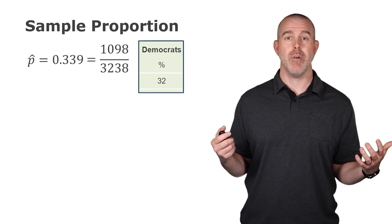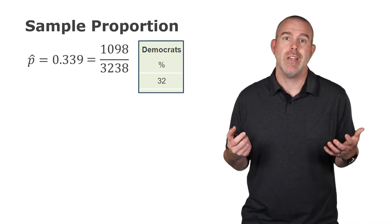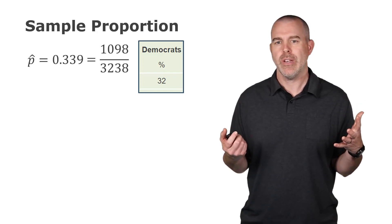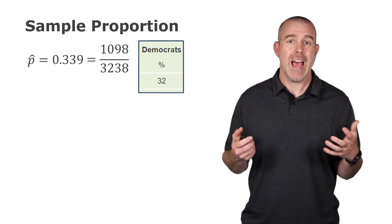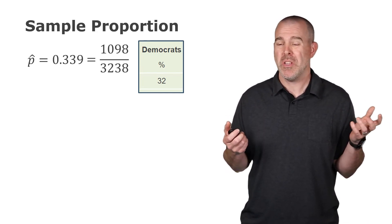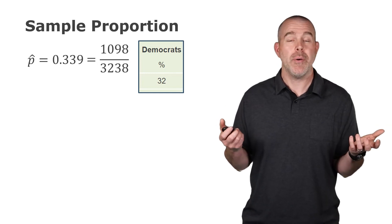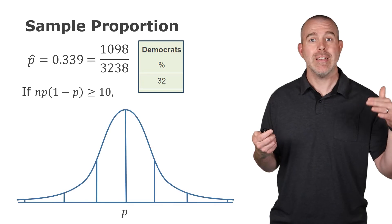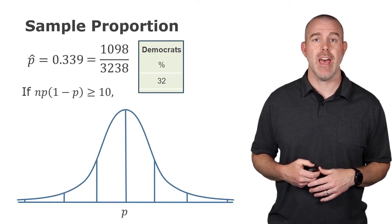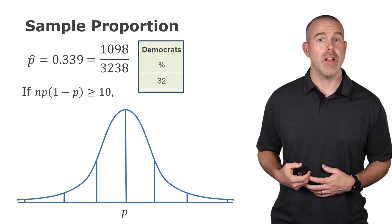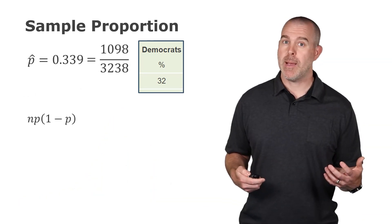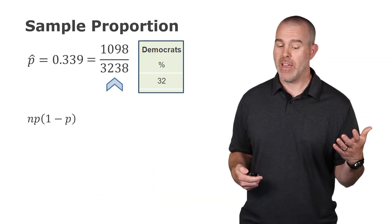Let's go back to our example. We have our sample proportion, 0.339, and we're wondering, okay, that's pretty close to the 32, but how different is it? Is it unlikely? Is it unusual? Is it super common? How unlikely is it? We need a probability. Well, we know if n times p times 1 minus p is at least 10, then our distribution should follow the normal distribution. Let's check it.